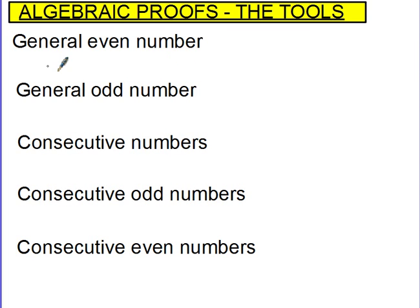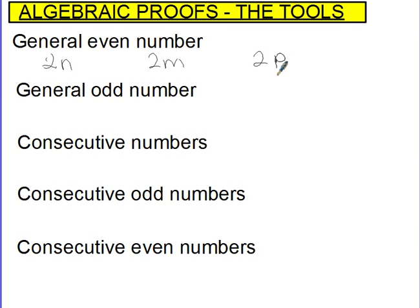You need to be able to write a general even number. Any number multiplied by 2 is an even number. So you could have 2n, 2m, or 2p. Any letter times by 2 will generate an even number. That's the way that when we're doing these questions we write down a general even number.